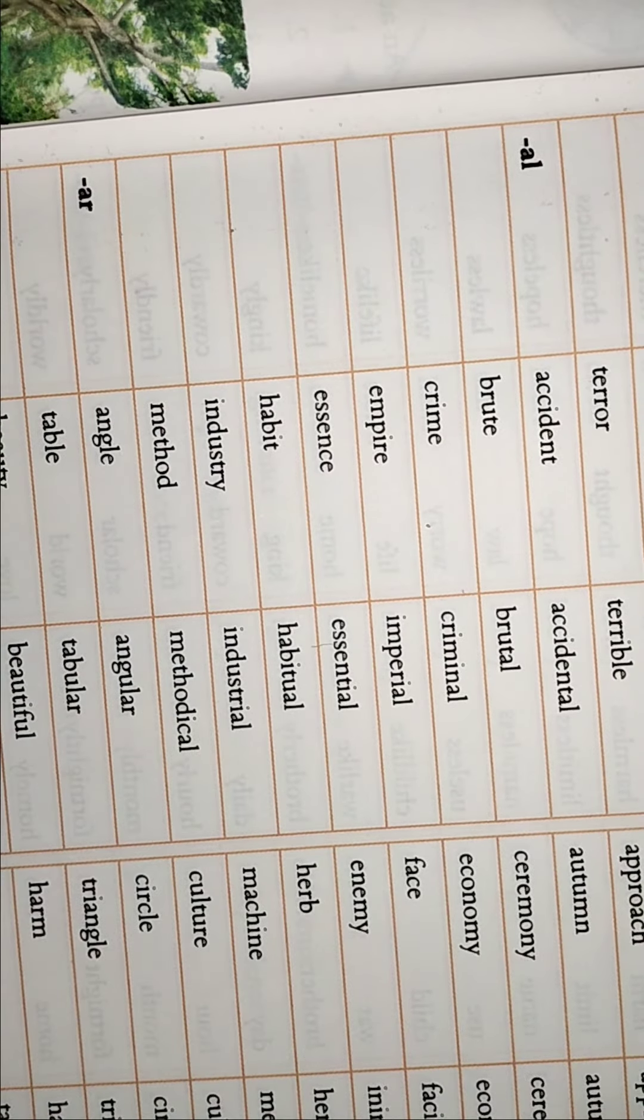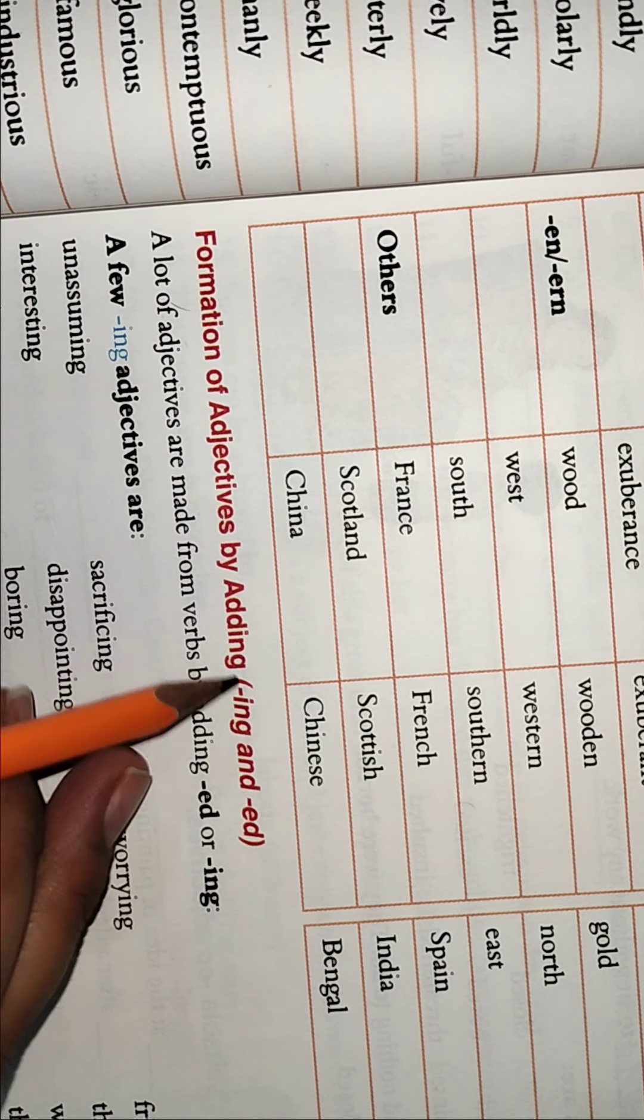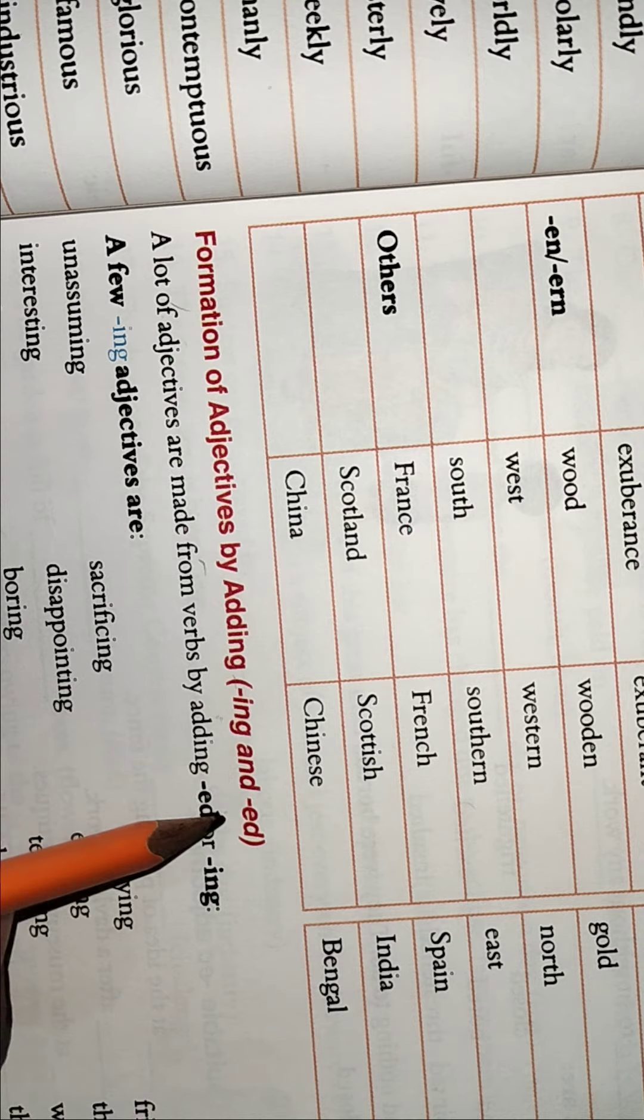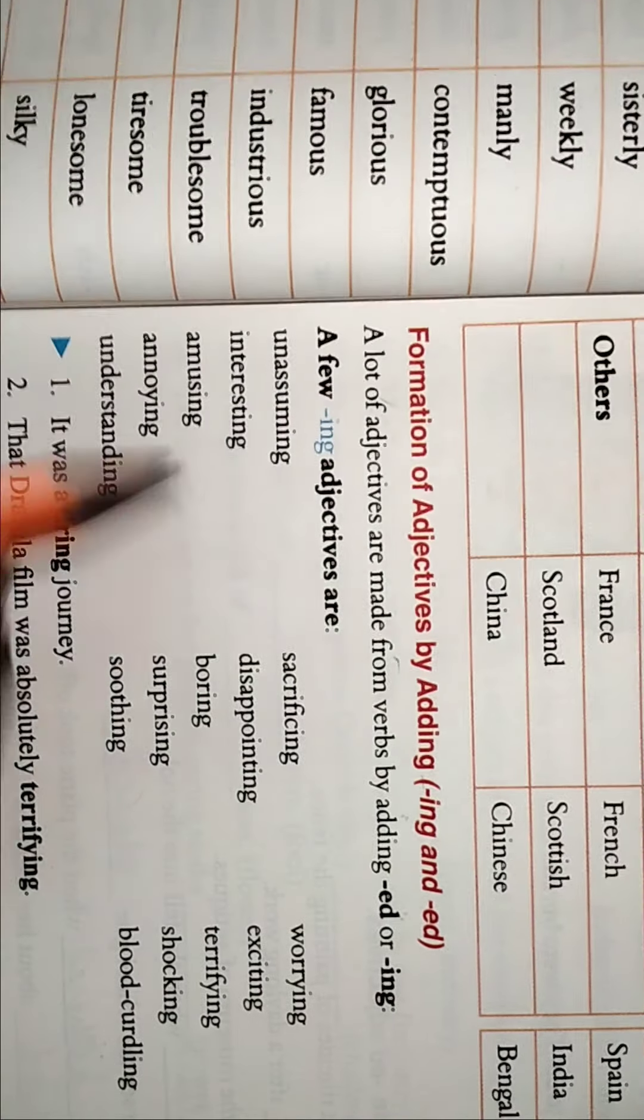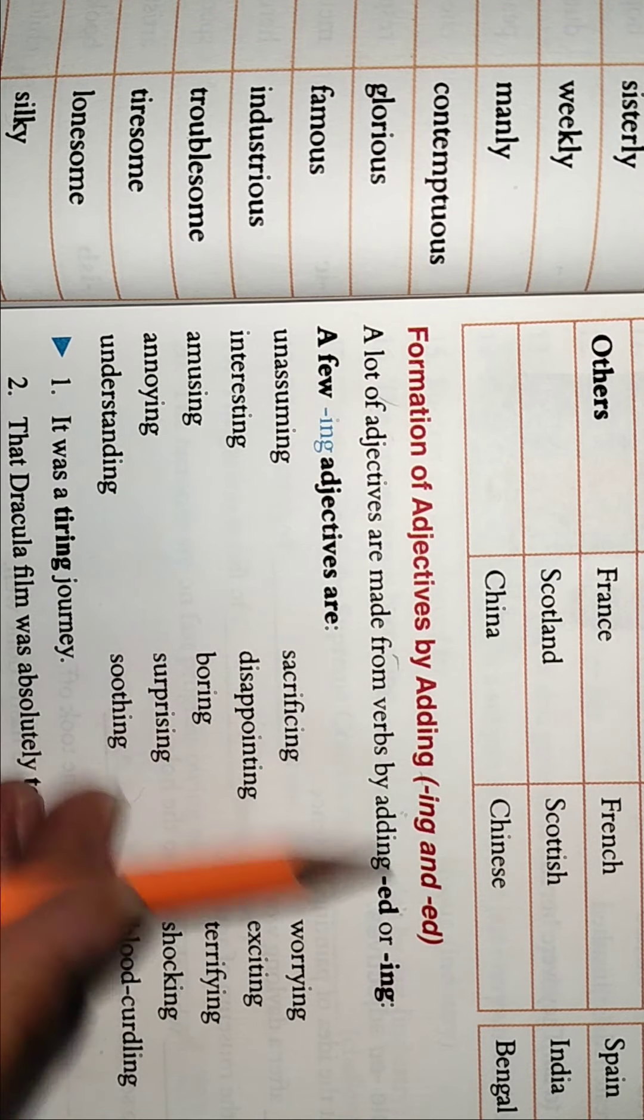So all you have to do is read it yourself. Then we come to the formation of adjectives by adding ING and ED. ING and ED lagakar bhi bache humare adjective bante hain.